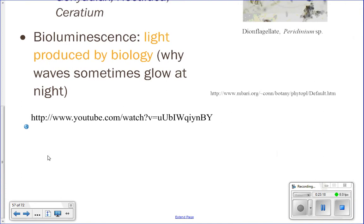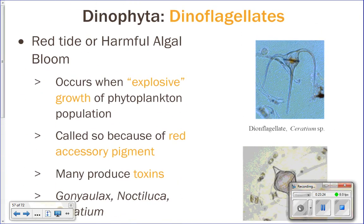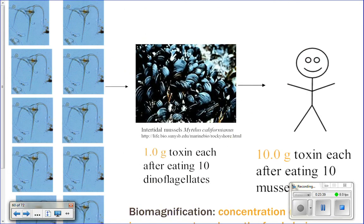That's when you get the blooms of phytoplankton. Some of these dinoflagellates can also produce toxins, and through the process called biomagnification they can actually kill you. Each little dinoflagellate produces a toxin, and biomagnification means that each step up the food chain, the amount of toxin gets concentrated — about 10 times more every time you move up the food chain.